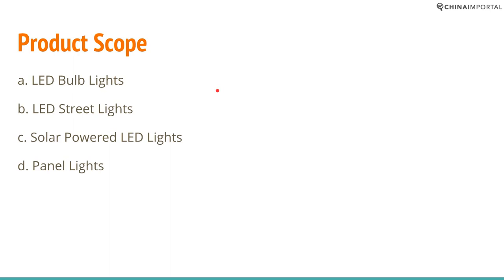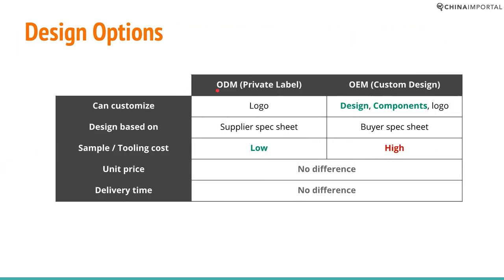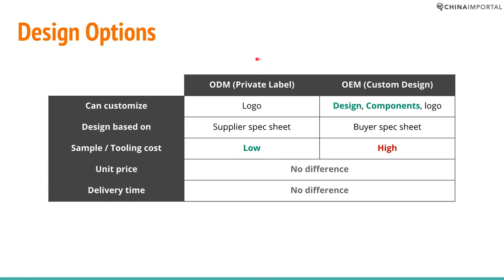That's why product scope matters. In the LED industry, as in every industry, you have two different options. You can buy an ODM product, meaning the design is based on the supplier's spec sheet. You can go on Alibaba, type in 'E27 LED bulb light,' and you'll probably find around 600,000 products or more.